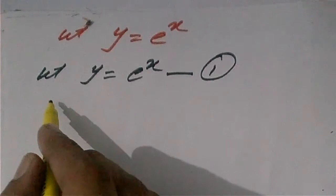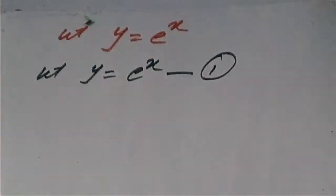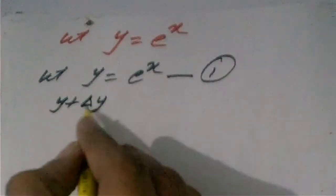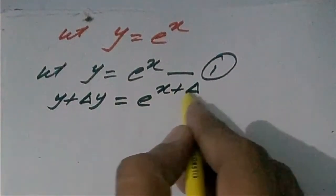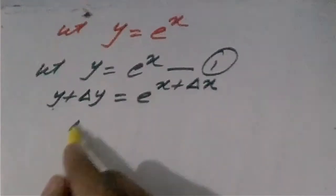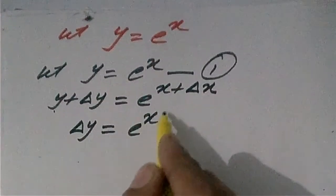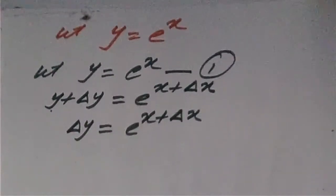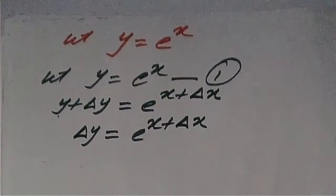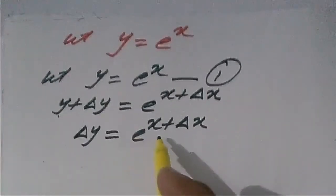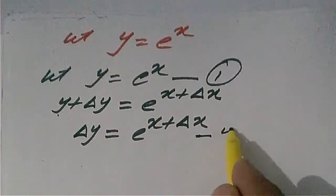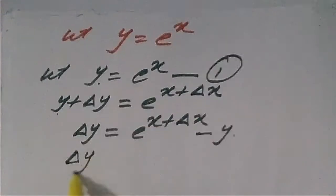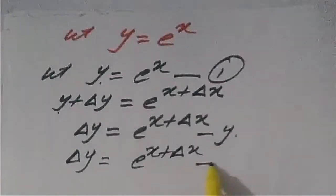If we give an increment of delta x in x, and as a result the increment in y is delta y, then we write: y plus delta y is equal to e raised to the power x plus delta x. Transposing y to the right side, delta y is equal to e raised to the power x plus delta x minus e raised to the power x, substituting the value of y from equation 1.